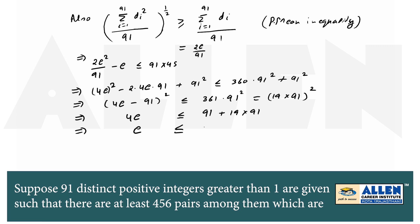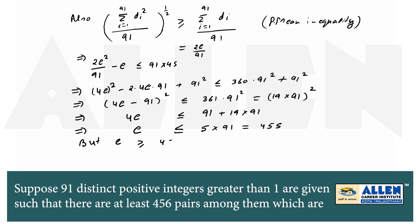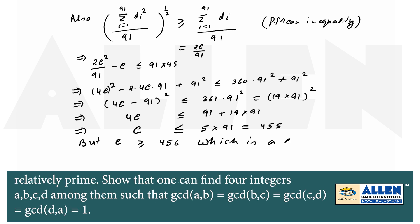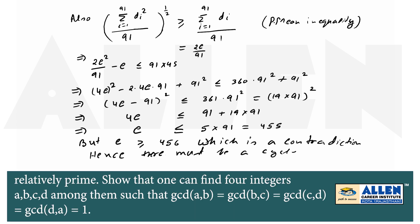This implies 4E less than or equal to 91 plus 19 into 91. Hence E less than or equal to 5 times 91 equal to 455. But E greater than or equal to 456, which is a contradiction. Hence there must be a cycle of size 4.